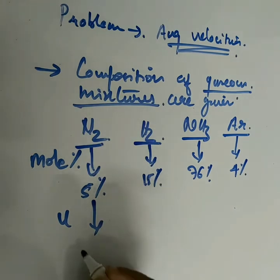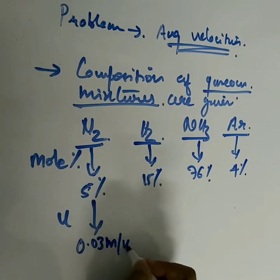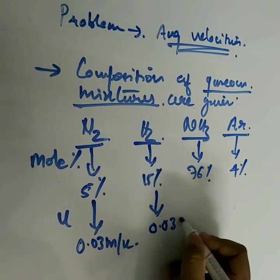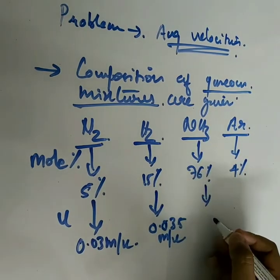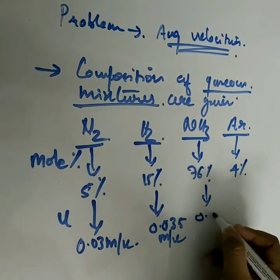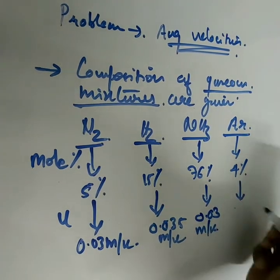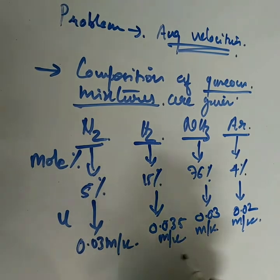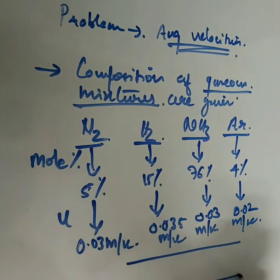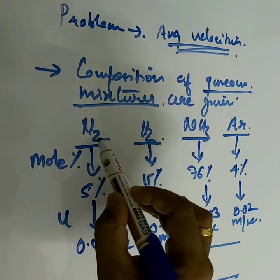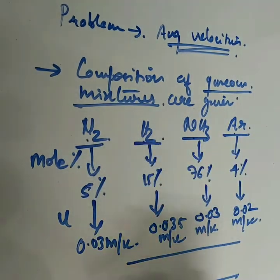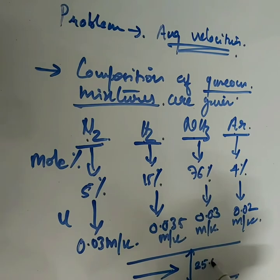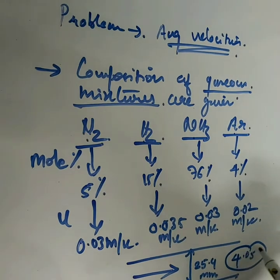The absolute velocity of nitrogen is 0.03 m/s, for hydrogen it is 0.035 m/s, for ammonia it is 0.03 m/s, and for argon it is 0.02 m/s. This mixture is moving through a pipe with a diameter of 25.4 millimeters and a pressure of 4.05 bar.